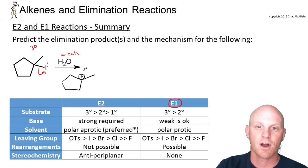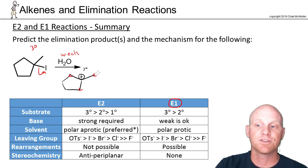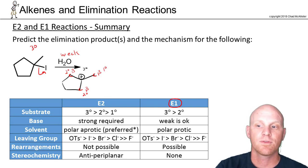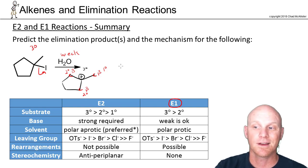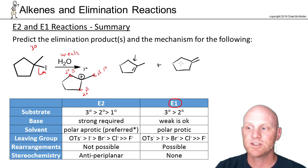In this case, we have a tertiary carbocation, and none of the three adjacent carbons would be more stable, so no rearrangements. Those three adjacent carbons are our beta carbons. Two of the secondary ones are equivalent and lead to one product; the primary one leads to another. So we have two different sets of beta hydrogens, giving us two regioisomers.